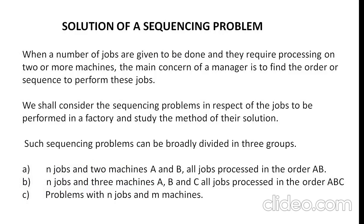The sequencing problem deals with the selection of an optimal model for the number of jobs to be performed with a finite number of facilities — that is, the number of machines. When a number of jobs are given to be done and they require processing on two or more machines, the main concern is to find the order of the sequence to perform these jobs. Such problems can be broadly divided into three groups: n jobs two machine problems, n jobs three machine problems, and n jobs m machine problems.